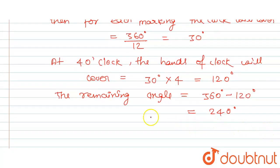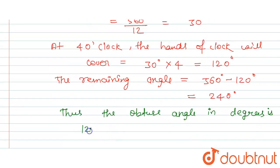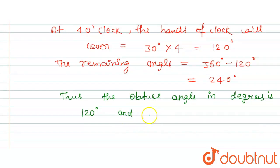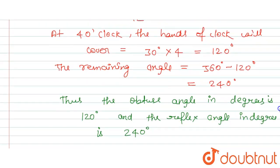Thus, the obtuse angle is 120 degrees — obtuse angles are always greater than 90 degrees and less than 180 degrees. The reflex angle, which is the remaining angle, is 240 degrees. The reflex angle is always above 180 degrees. So this is the final answer.